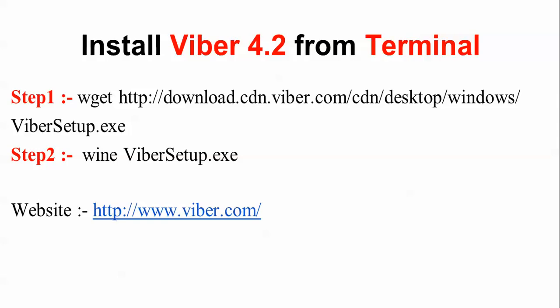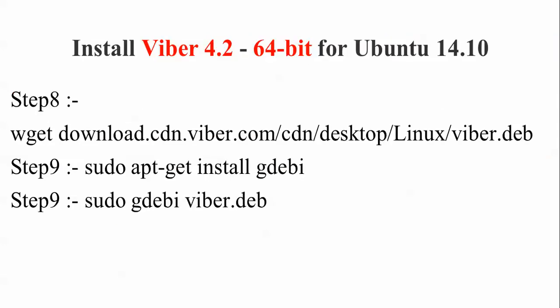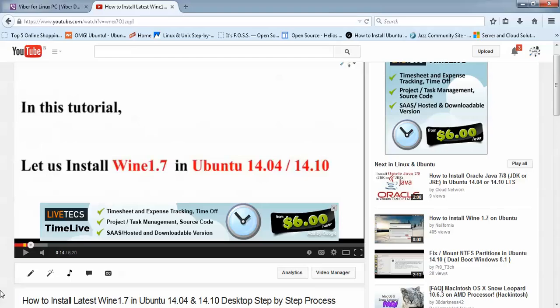Now I need to download Viber. This is the website of Viber where you can download it manually or from the terminal. This is the 32-bit version — I am going to show you how to install Viber. This is the procedure for installing the 64-bit supported Viber as well.